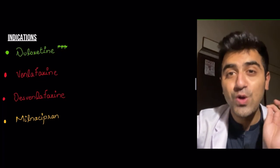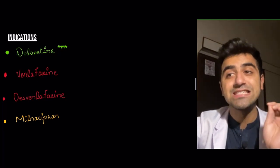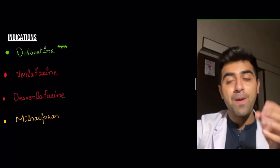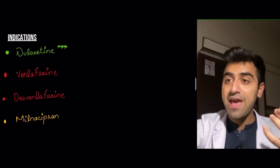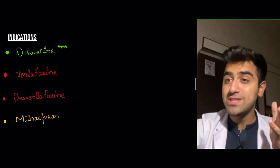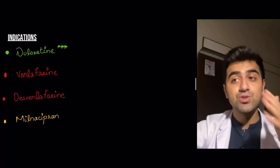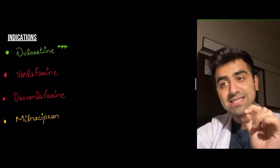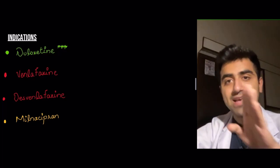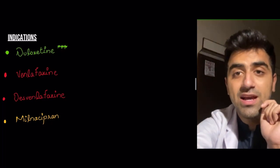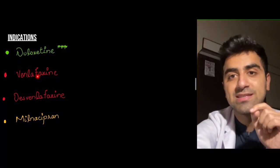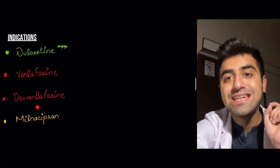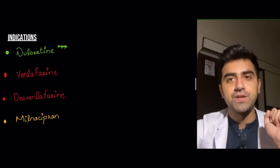Duloxetine — I need you to remember duloxetine in particular is an SNRI, because in my video on SSRIs I talk about how those drugs have '-tine' in their name, like paroxetine and fluoxetine, yet those are SSRIs. So remember: duloxetine is an SNRI. The rest are SSRIs. The other SNRI you'll usually encounter on an exam is venlafaxine.